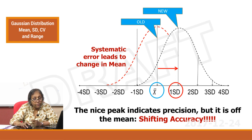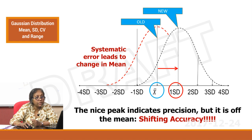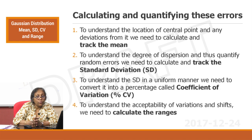This is what we would call shifting accuracy, which is indicative of a systematic error. We will discuss in further videos how to pick up systematic errors on your analytical system. This is the shift that has happened in your analytical system — errors can be picked up using the Gaussian.